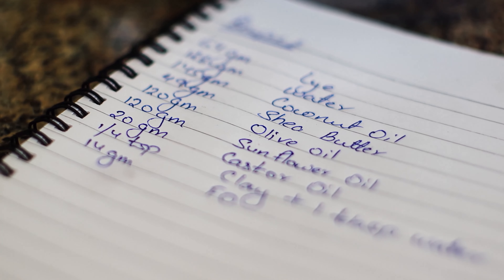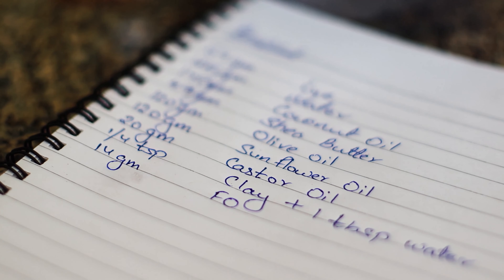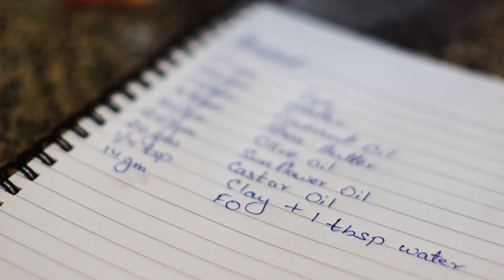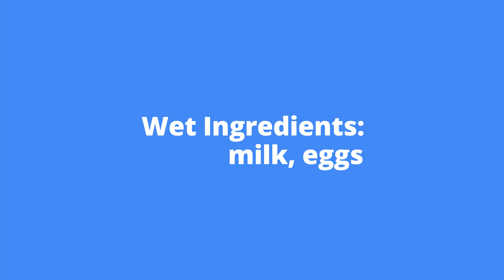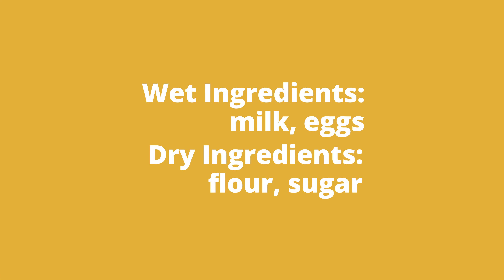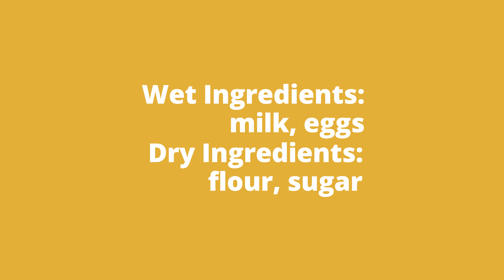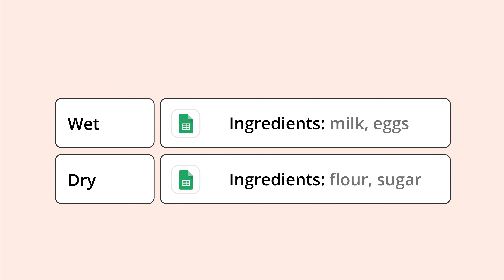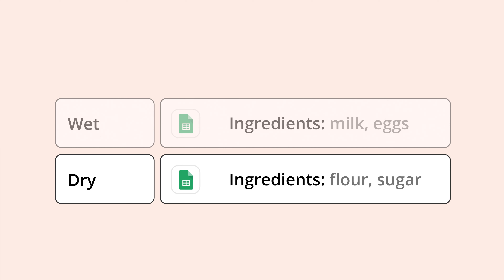Before we get too far, let's define a line item and a line item array. Think about a cake recipe — every recipe starts with a list of ingredients. You'll have wet ingredients like milk and eggs, and dry ingredients like flour and sugar. Each set of ingredients, dry and wet, would be their own line item array. Inside that array are the ingredients, or line items. Milk and eggs are line items for the wet ingredients' line item array; flour and sugar for the dry.